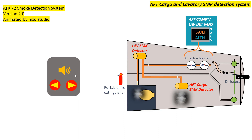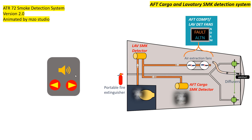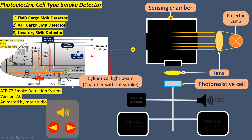The aft cargo compartment extinguishing system is installed on the ceiling of the cargo compartment and includes two diffusers. A portable fire extinguisher is connected to the system orifice located above the cabin attendant seat and discharges extinguisher agent. Operating principle of the photoelectric cell smoke detector: a projector consisting of a lamp and a lens sends a cylindrical light beam through a sensing chamber.